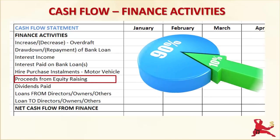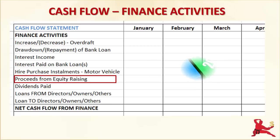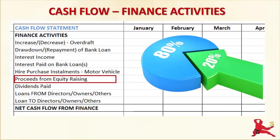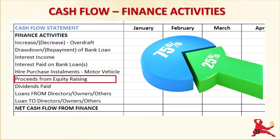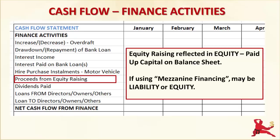If your business raises equity from investors, or even if you as business owner provide money to your business in the form of equity, the amount of equity that comes in as cash shows up as a cash inflow in the Financing section. Cash inflows from equity raisings are reflected by an increase in the equity section of the Balance Sheet. Sometimes businesses raise money by using hybrids of debt and equity called mezzanine financing. Whether these end up on the Balance Sheet under Liabilities or Equity depends on whether the financing has more of the characteristics of debt or equity.